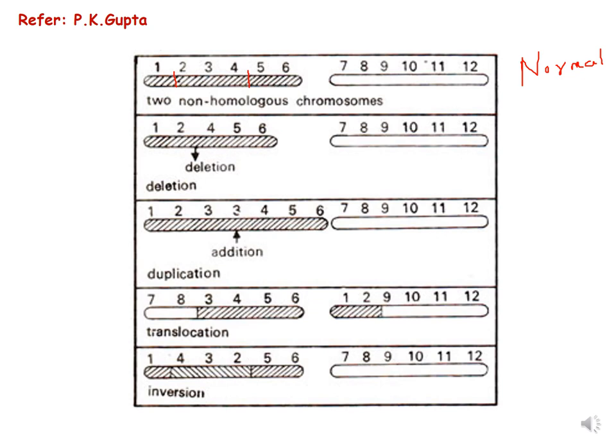You can refer to P.K. Gupta for this picture. You can see that in deletion, gene number three has been deleted. In duplication, gene number three has been duplicated. In translocation, parts of non-homologous chromosomes are exchanged. In inversion, the orientation of the genes has changed.